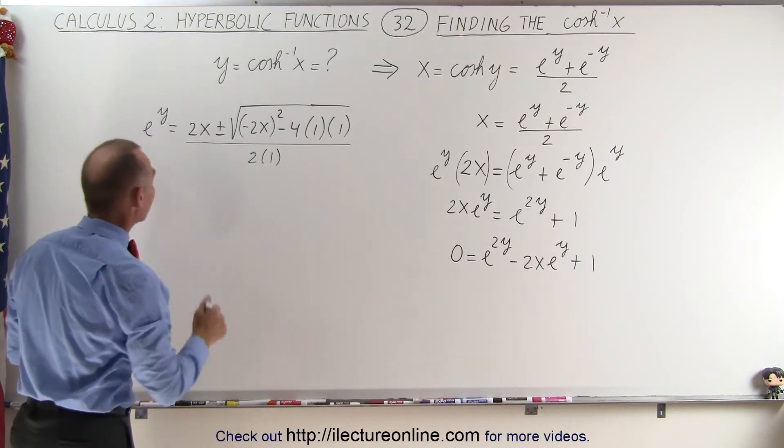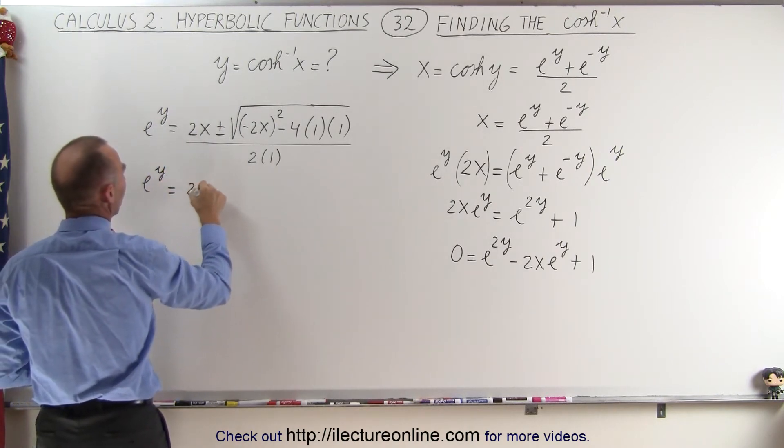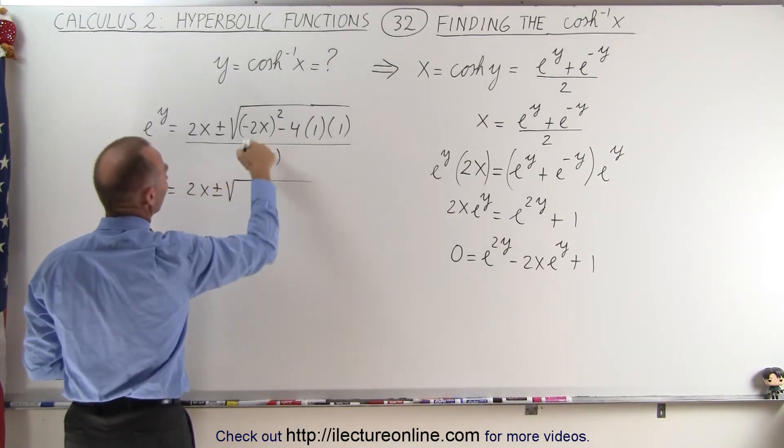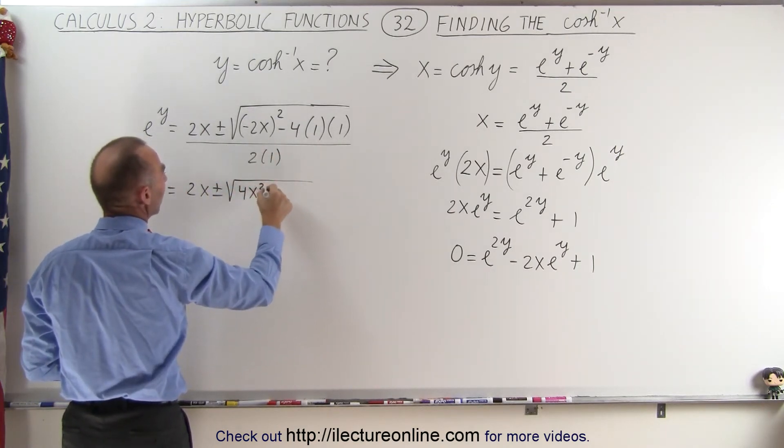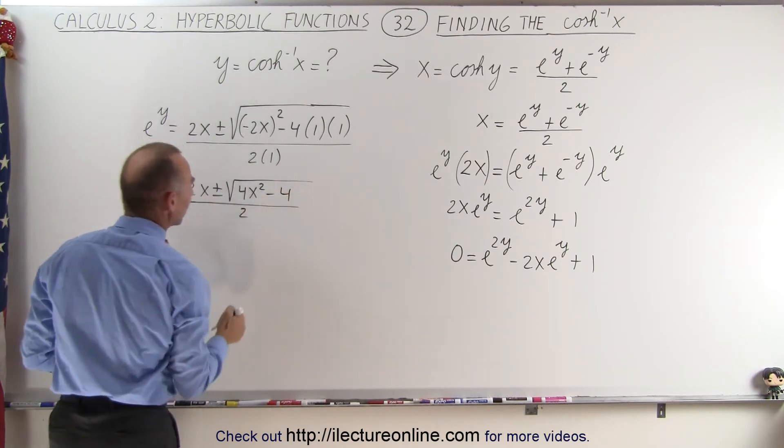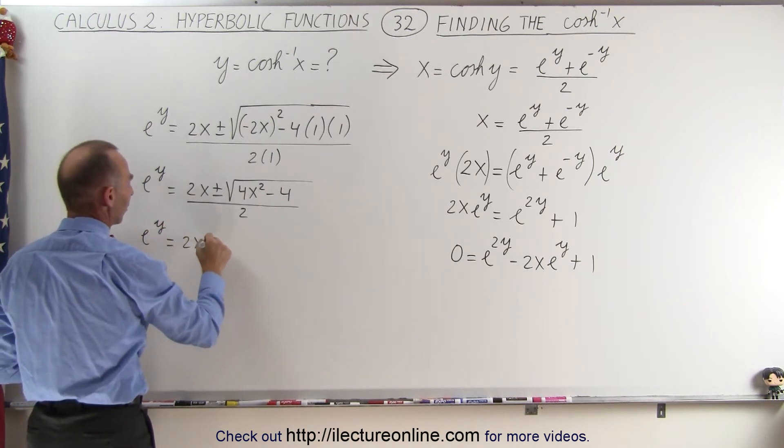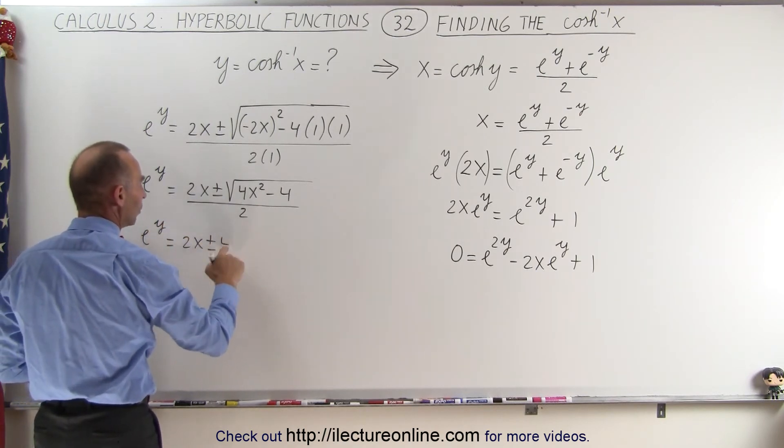Now working this out, we get the following. So e to the y now becomes equal to 2x plus and minus the square root of, this becomes 4x squared, minus 4, all divided by 2. We can factor out of 4, e to the y equals 2x plus and minus,